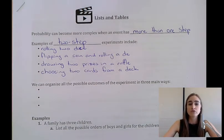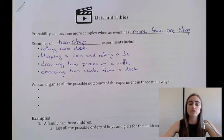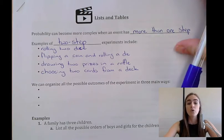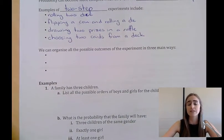Examples of two-step experiments could be rolling two dice together, flipping a coin and rolling a dice, drawing two prizes from a raffle, or choosing two cards from a deck. When we're doing that, there's more possibilities because we're doing two steps, so we need to be able to organize all the possible outcomes.